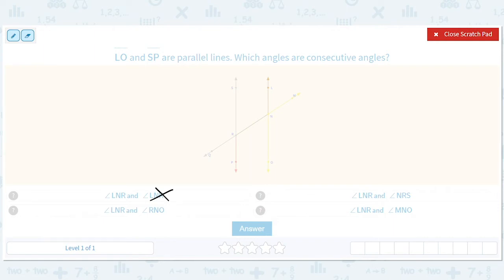LNR and RNO. So LNR, RNO. No, those would be supplementary angles. So I'll erase that. LNR and NRS. So LNR and NRS. Yeah, these are good. Those are consecutive.